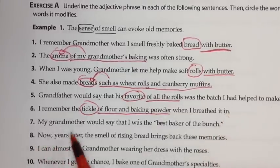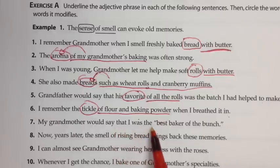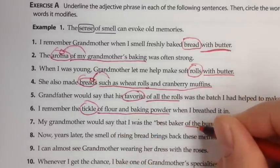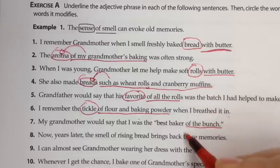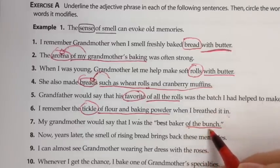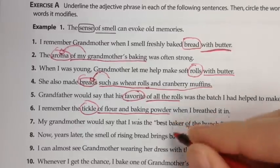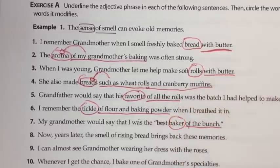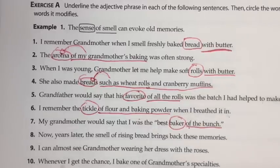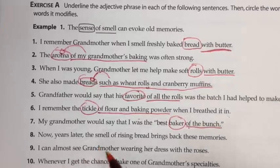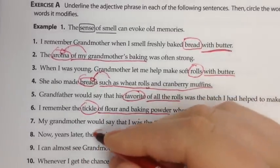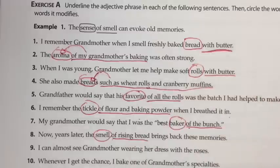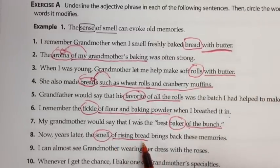Seven: my grandmother would say that I was the best baker of the bunch. 'Of the bunch' — 'of' is a preposition, here's our object, and these both describe the word 'baker.' Eight: years later, the smell of rising bread brings back these memories. 'Of' is our preposition, and 'rising bread' is our object.